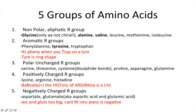The way I remember the positively charged group is I think 'basically,' and 'basic' helps me remember it's positive. So basically, the history of Argentina is a lie — that's lysine, histidine, arginine. And then for the negatively charged R groups, those are aspartate and glutamate, also known as aspartic acid and glutamic acid. Up here we've got basic, down here we've got acidic and negative. My mnemonic: 'Ass and glutes are too big, can't fit in your genes.'